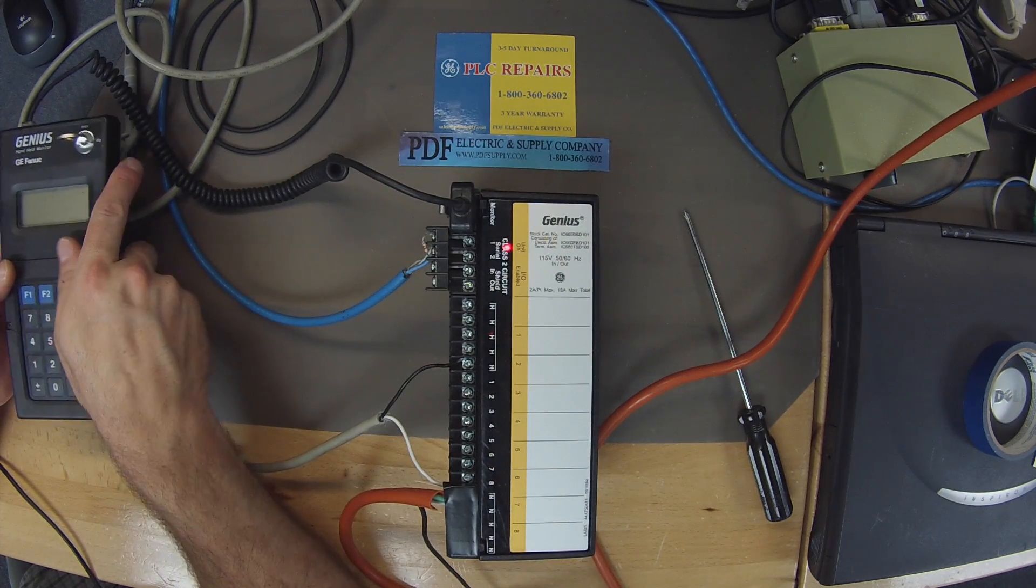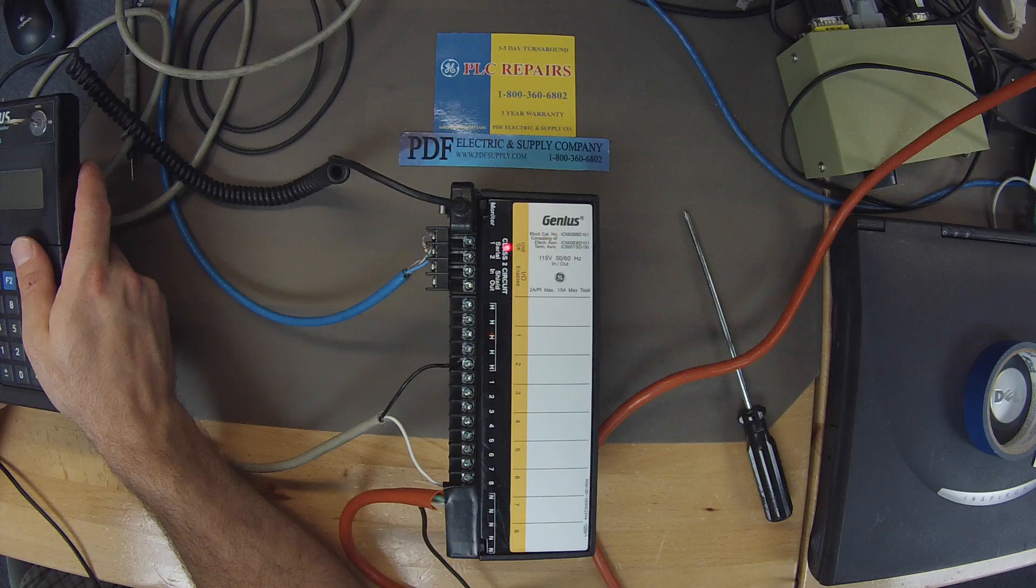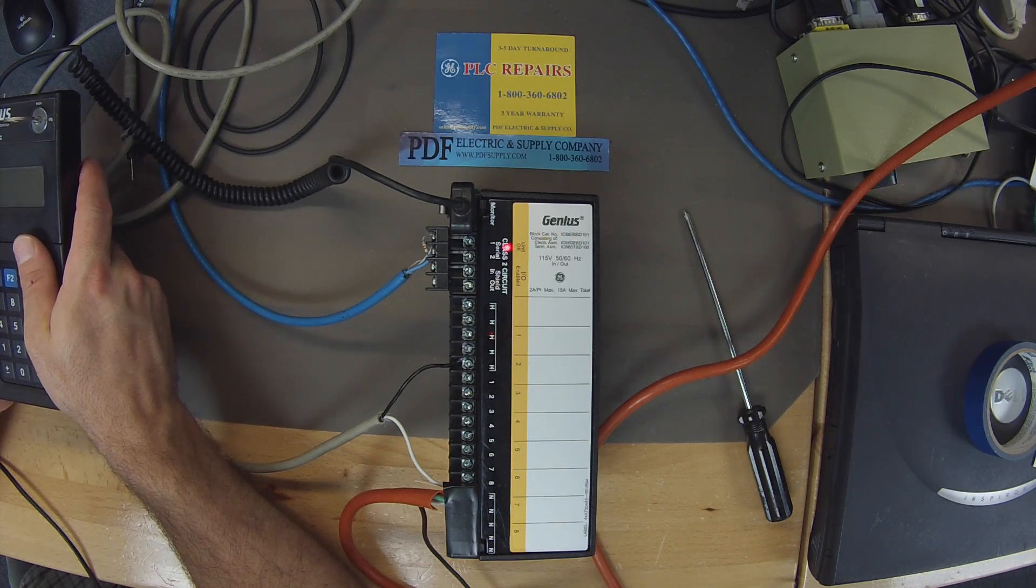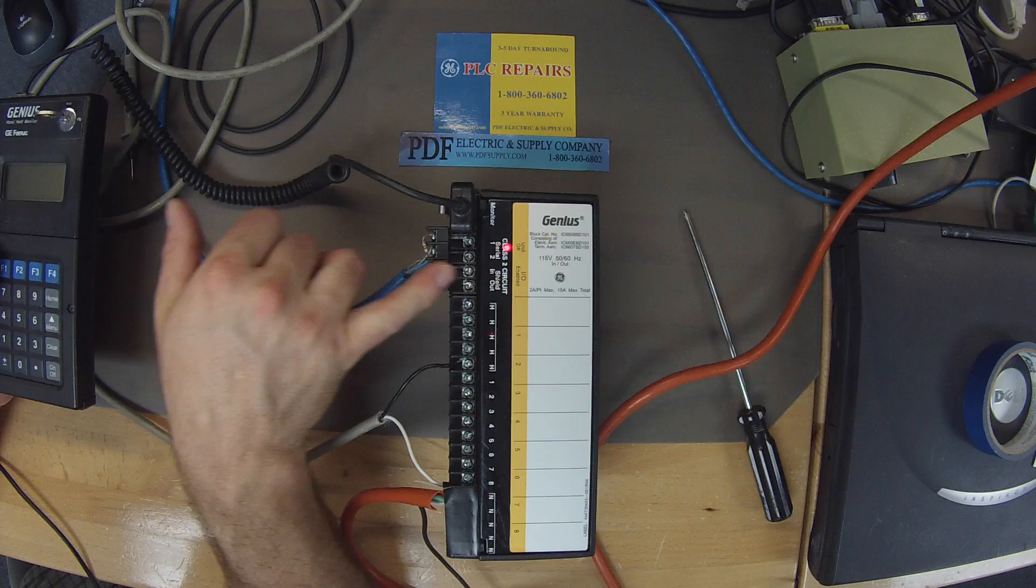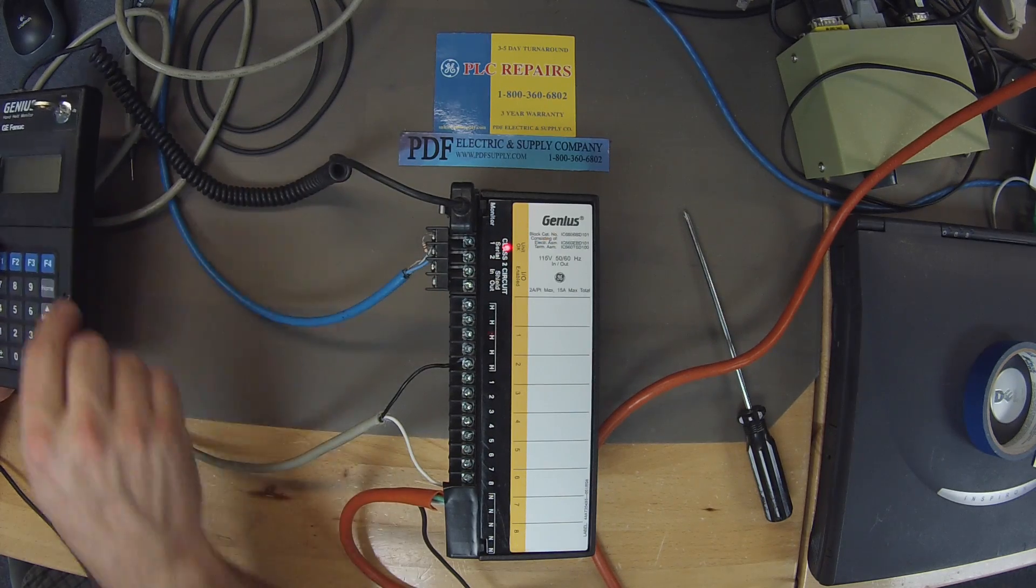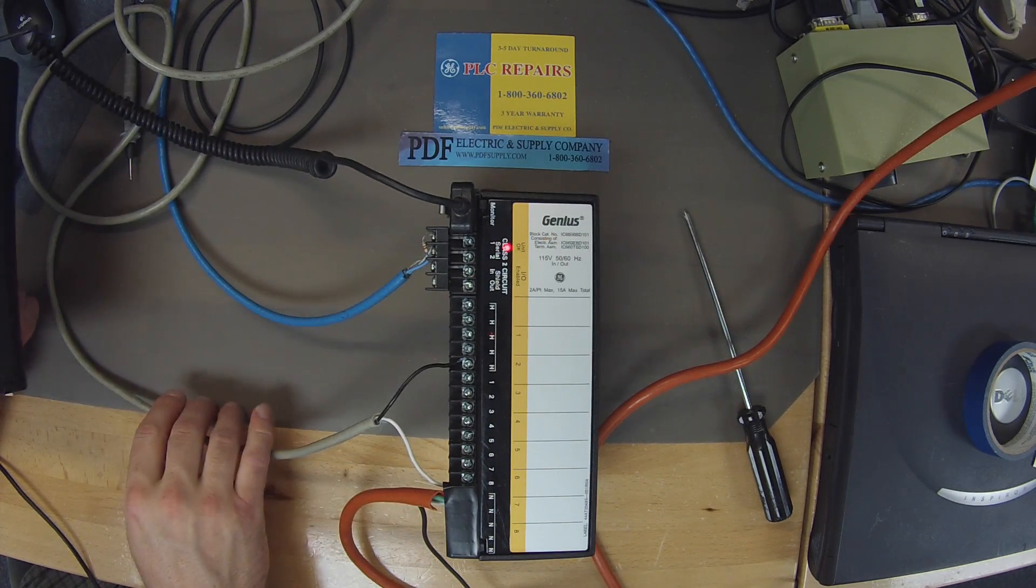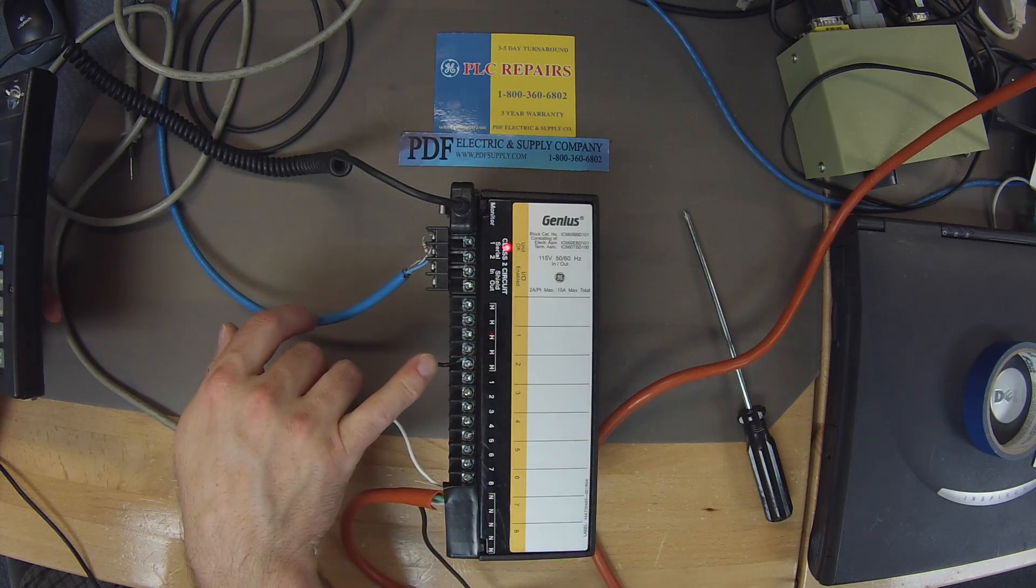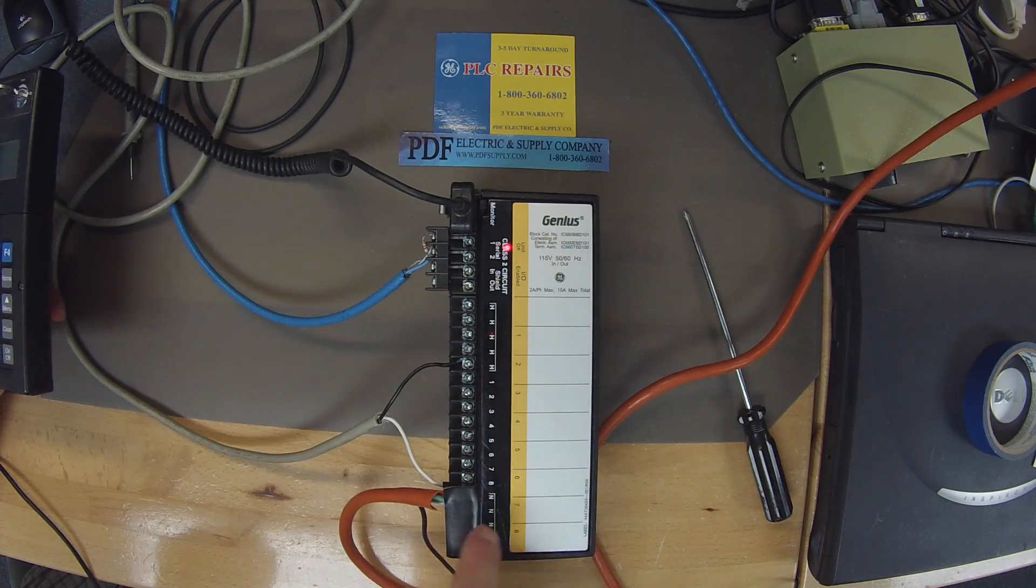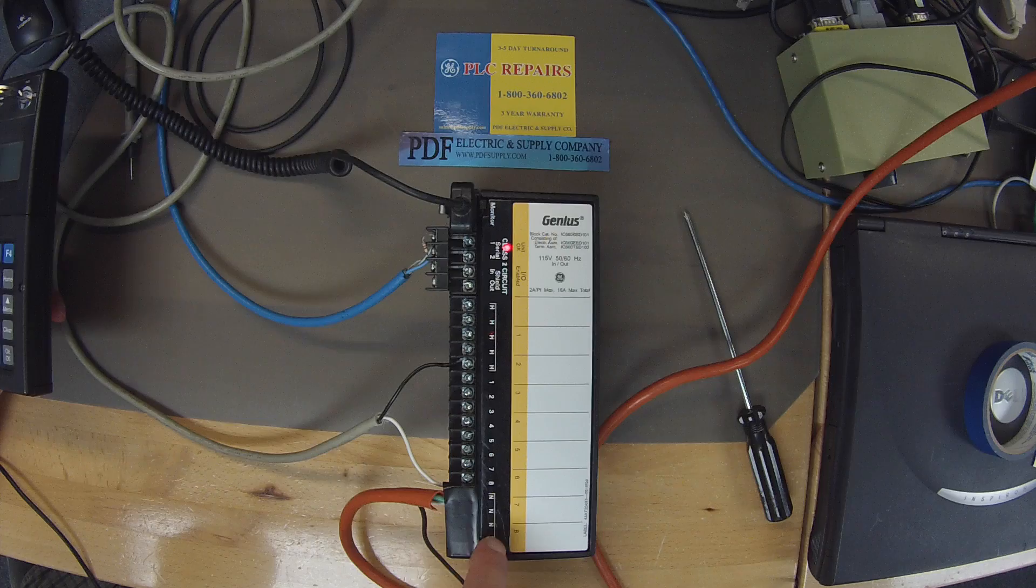I also have an IC693 BEM331 Genius Bus Controller which is plugged in right here through my serial 1, 2 and my shield. A power cord, 115 volt AC. I have my hot lead going to where it says H indicated on the door here and my neutral lead going in to where it says neutral.